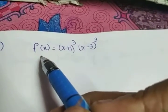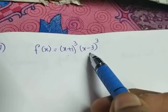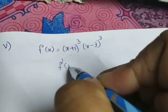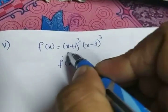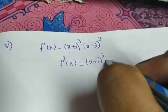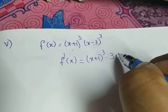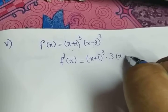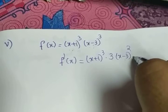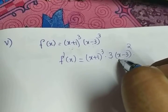The fifth part of the question: f(x) = (x+1)³ · (x-3)³. To find f'(x) we apply the product rule. The first function is (x+1)³ and the second term is of the form xⁿ, so its derivative is n·(x-3)² — that is, n·xⁿ⁻¹ — and we also take the derivative of (x-3).